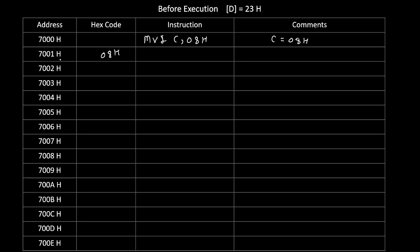This instruction takes two memory locations, so the second instruction is written at 7002H. At 7002H we write MVI B, 00H. We are initializing B to 00H because every time a carry is generated we are going to increment B by 1 — ultimately we want the count of ones stored in B. So initially B is set to 00H. MVI B opcode is at 7002H and 00H is written at 7003H.